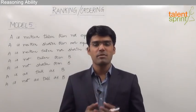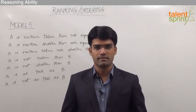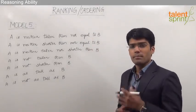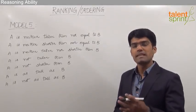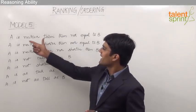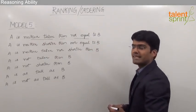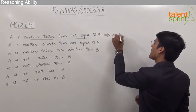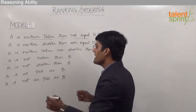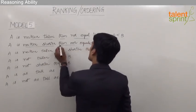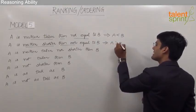Let us now understand the various types of inequalities required to solve questions from ordering. For example, let us assume we are comparing the heights of two persons A and B. The statement 'A is neither taller than nor equal to B' means A is less than B. Similarly, 'A is neither shorter than nor equal to B' means A is taller than B, or A is greater than B.